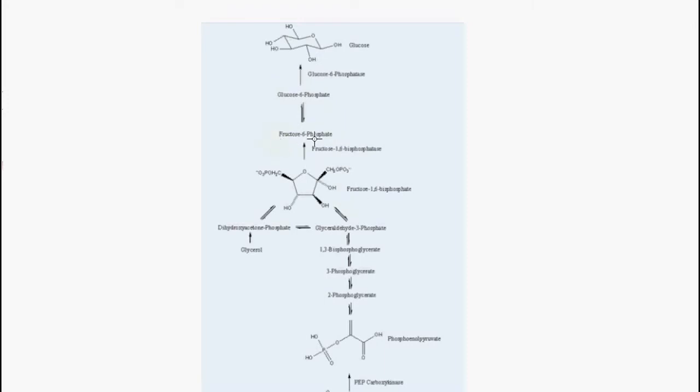So now we have fructose 6-phosphate, which is converted into glucose 6-phosphate using the same enzyme as glycolysis. From here, glucose 6-phosphate is converted into free glucose using the enzyme glucose 6-phosphatase.